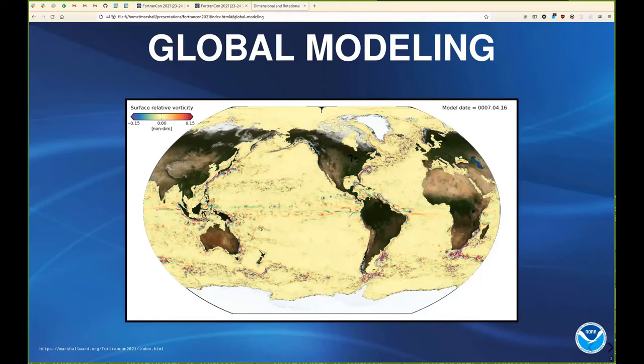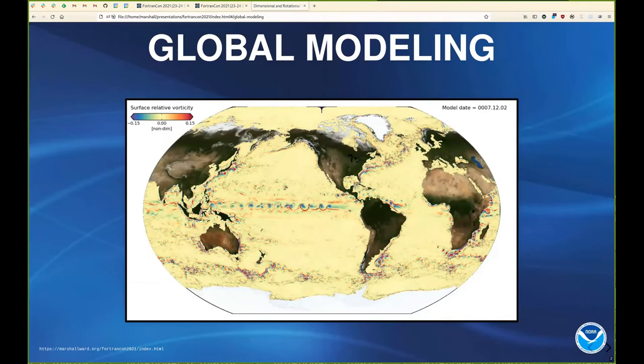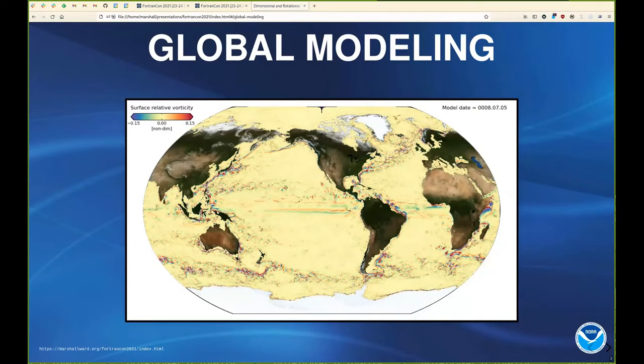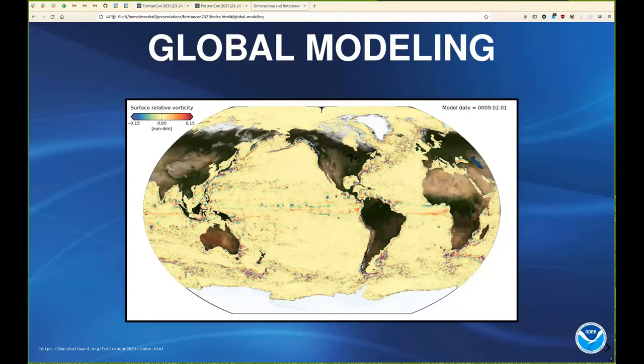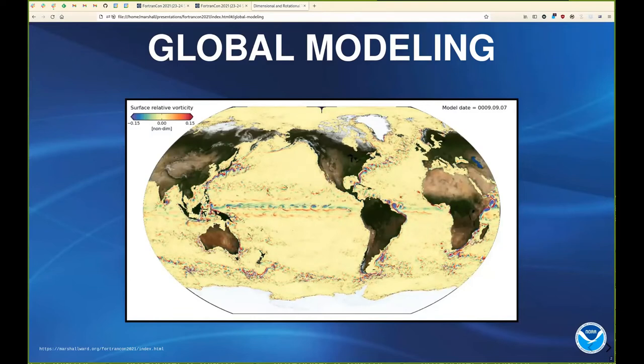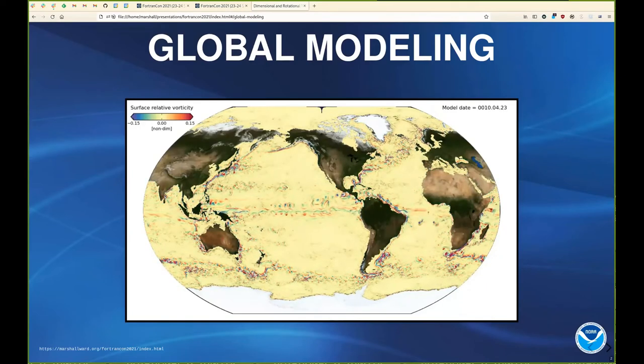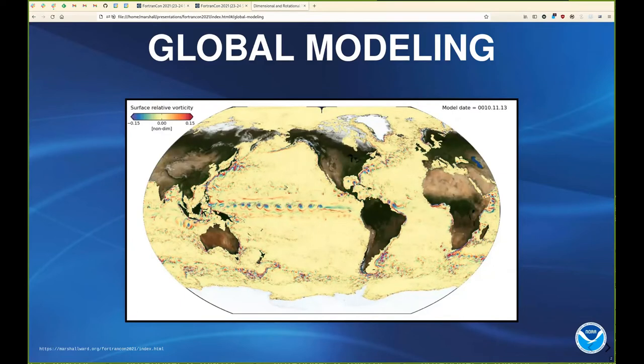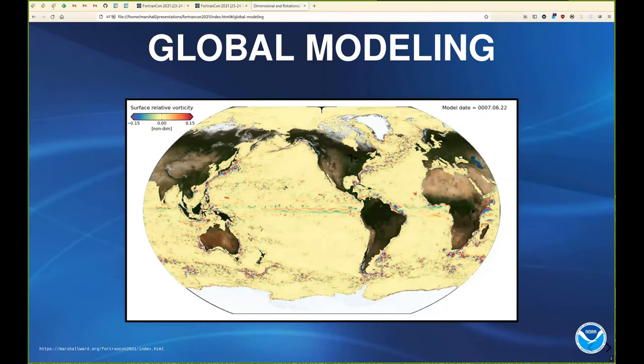Rather than explain how MOM works, I thought it might just be better to show what it can do. This is from our CM4 coupled model, our most recent, and it's demonstrating the very diverse length and time scales that we have to juggle when we're running an ocean model. You can see the comparatively fast and large equatorial waves going across, bouncing off the shelves and being generated by the winds. And then on top of that, we also have the very much comparatively slower and turbulent eddy currents in the Southern Ocean and off of the continental shelves like North America, Japan, and South Africa, and South America. You also see these very rapid whipping things of the tropical storms that form.